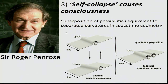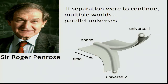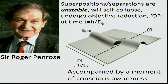Sir Roger Penrose suggested the opposite: that self-collapse causes consciousness. These superpositions — equivalent to separated curvatures in space-time geometry — are unstable. Rather than branching into multiple worlds, Penrose said they self-collapse, or undergo objective reduction (OR), at a time t given by ℏ/E_G, the magnitude of the separation. Most critically, this is accompanied by a moment of consciousness. Conscious awareness occurs every time this self-collapse occurs — it would be happening everywhere, in the air, in the water — but mostly random, and wouldn't amount to much.